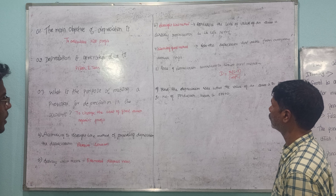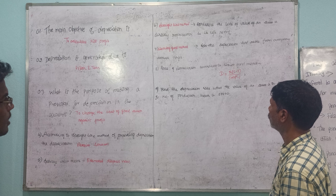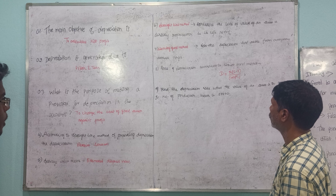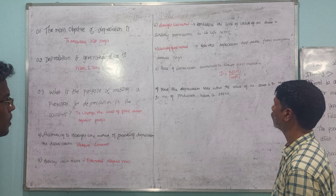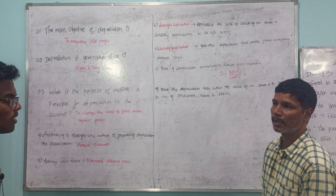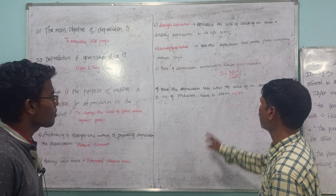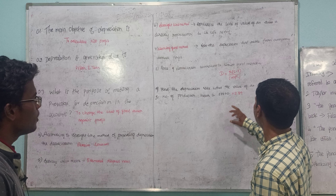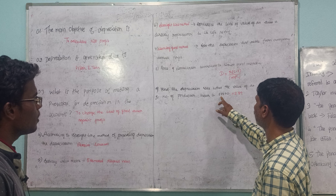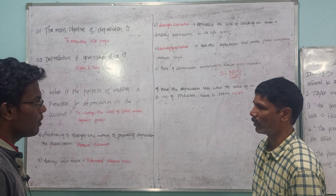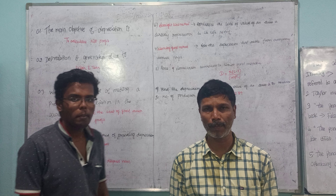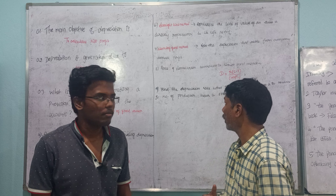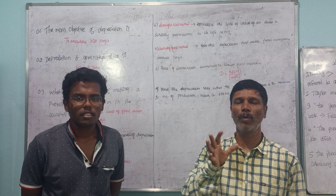Find the depreciation rate when the value of an asset is Rs. 25,000 and the number of production units is 87,600. Depreciation is one of the important concepts.